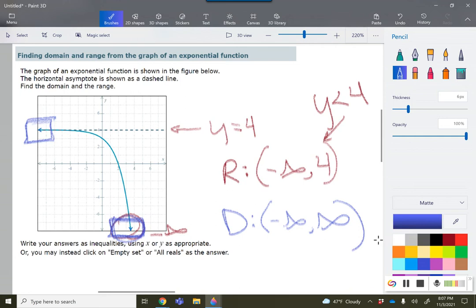For the domain, because it's from negative to positive infinity, there are no restrictions. But since they wanted inequalities, or you may click on empty set or all reals, because there's no restrictions, that's going to be the same thing as all real numbers.